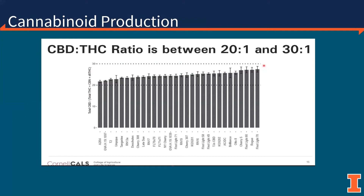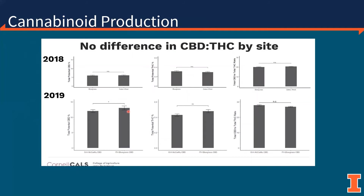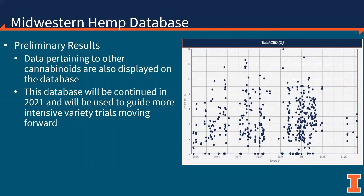These results have been supported by work done by Cornell University looking at CBD to THC ratios of some popular commercially available cultivars, many of which are listed in the Midwestern Hemp Database. Research out of Cornell also indicates that stable cultivars will not exhibit changes in CBD to THC ratio despite differences in locations and stressors. For growers, this means that working with reliable seed suppliers with a history of stable genetics is going to be more important than production system or fertility regimen when it comes to producing a compliant crop. This program will be continued in 2021 and will be used to guide more intensive variety trials moving forward.